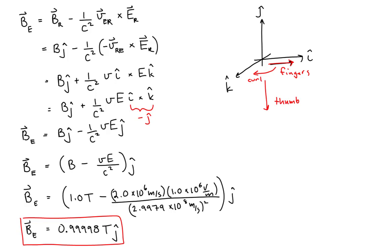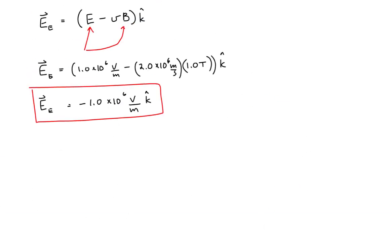The distinction only appears if we ignore significant figure rules and extend to more decimal places, where it becomes significant in the fifth decimal place. Because of the uncertainty built into our measurements, for all intents and purposes the scientists in the rocket ship and the observers on Earth would measure the same value for the magnetic field, but different values for the electric field.